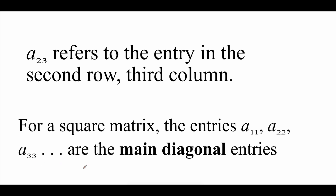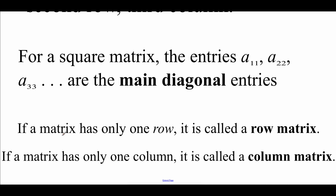Those things are called the main diagonal entries. And if we've got a matrix that has only one row, we call it a row matrix. And if we have a matrix that has only one column, we call it a column matrix.